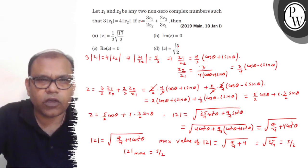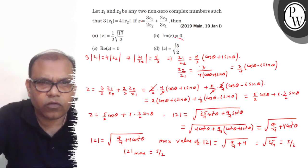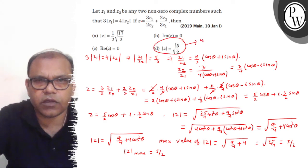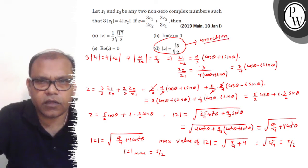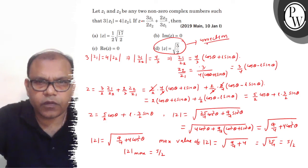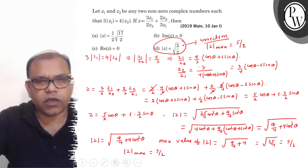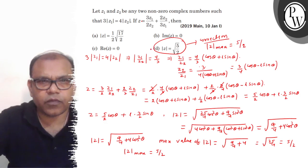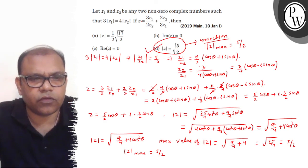This question has 4 options, and the answer is option D. There is a correction — there was a misprint. The correct result is mod Z maximum equals 5 by 2, and your correct option is option D. I hope you understood well, thank you.